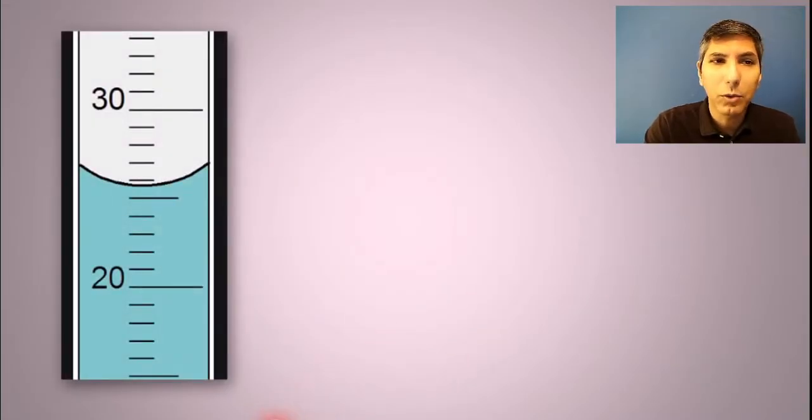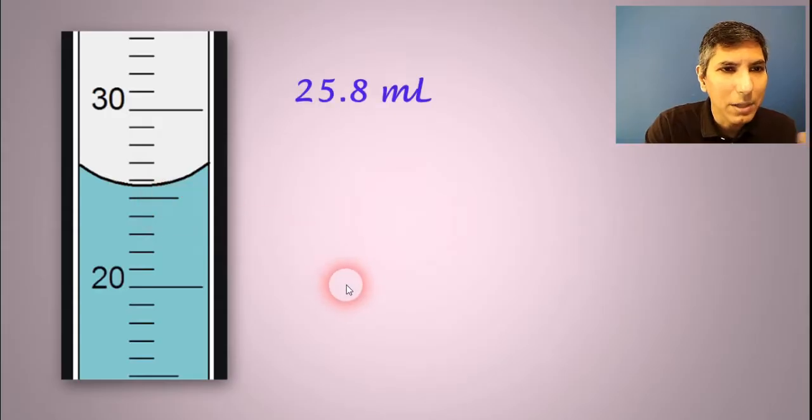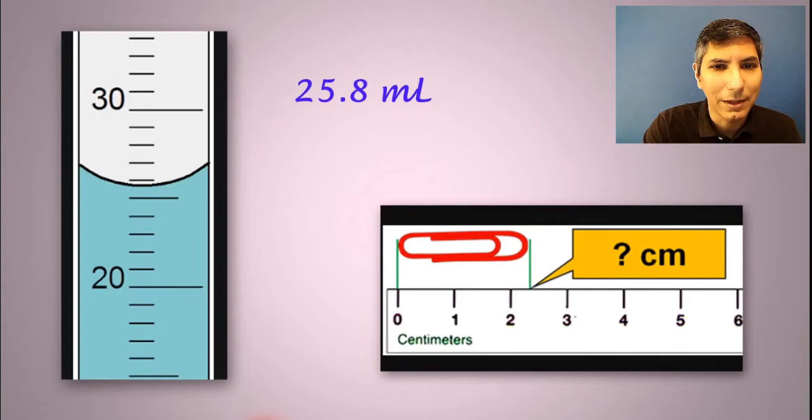Perhaps you have a graduated cylinder looking like this. We know it's somewhere between 25 and 26 milliliters. So you estimate that between the lines looks like it's about 25.8 or something like that. Other folks might look at that and say 25.7. There's a little bit of uncertainty here. All measurements need to have that little bit of uncertainty in there.